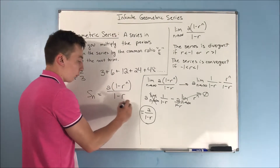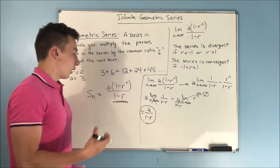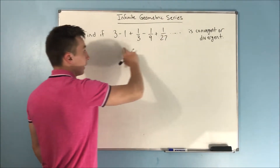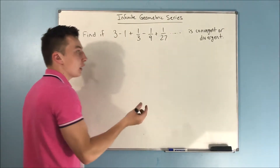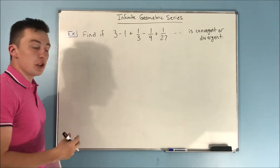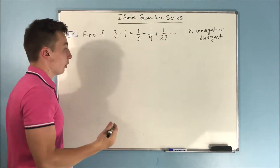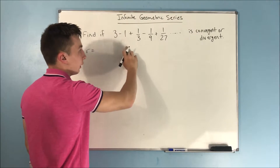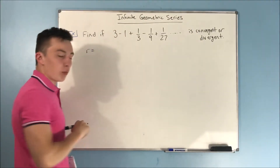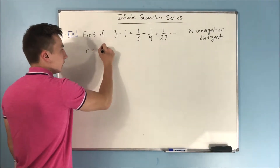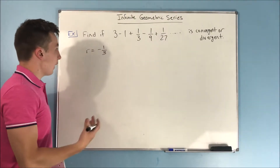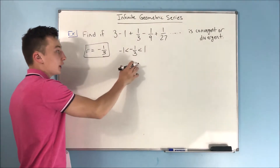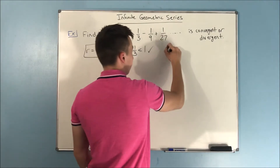That turns out to be a little nicer than the finite geometric series formula. We have a quick example: we want to find if the infinite series 3 minus 1 plus 1/3 minus 1/9 plus 1/27 is convergent or divergent. All we have to do is find the common ratio. How do we get from negative 1 to positive 1/3? We multiply by negative 1/3. So our common ratio is negative 1/3, which is between negative 1 and 1 — so this series is convergent.